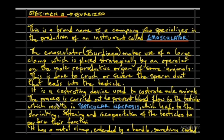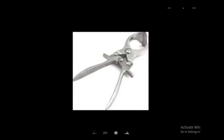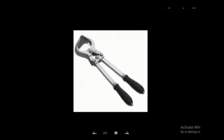The emasculator is a castrating device used to prevent blood flow to the testicles, which results in testicular necrosis. The aim is to prevent blood from reaching the testes, leading to shrinking and incapacitation of the testicles. It has a metal clamp that is sometimes coated. This is what the emasculator, or Burdizzo, looks like — you can see the metal clamp with an opening.